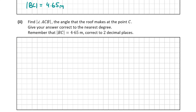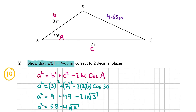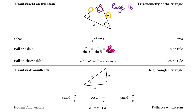Now let's look at E part 2 — this time we want to find the angle at C. We know BC = 4.65 meters from part 1, so we can write that in. We're trying to find the angle C and we have all three sides. Going back to page 16, the sine rule can find an angle when you have two sides and an angle, and the cosine rule finds an angle when you have three sides. Either could work, but the sine rule tends to be simpler.